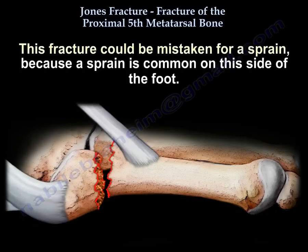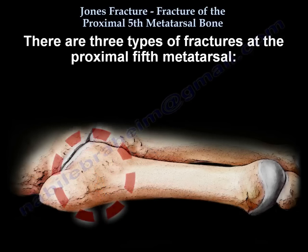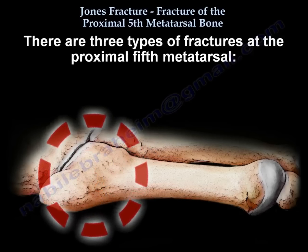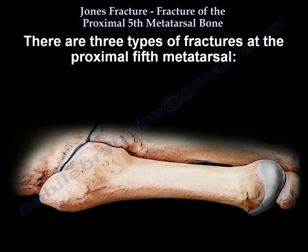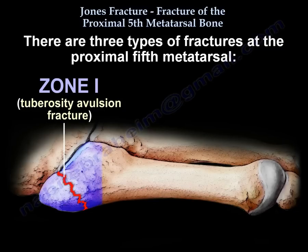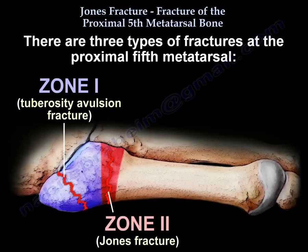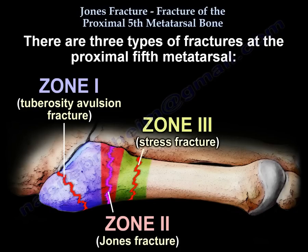Fracture of the proximal 5th metatarsal bone could be mistaken for a sprain because sprains are common on this side of the foot. There are three types of fractures at the proximal 5th metatarsal bone: fracture in zone 1, which is a tuberosity avulsion fracture; fracture in zone 2, which is the true Jones fracture; and fractures in zone 3, which are usually stress fractures.